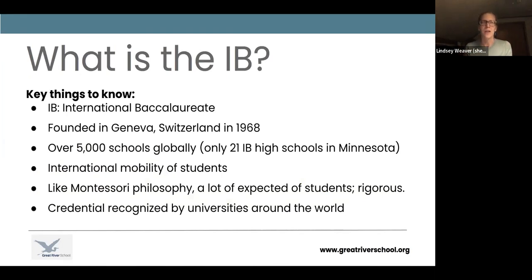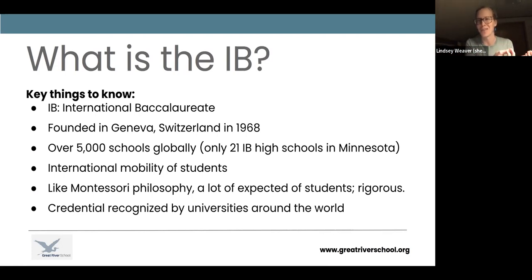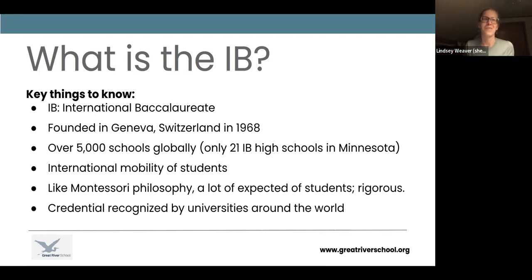The International Baccalaureate was originally intended to create a system where if a student moved countries — for instance, from the United States to the Czech Republic, or Japan to the United States — families could plan on not interrupting their children's education. If you're sitting in an IB math applications classroom at Great River School, there is another student sitting somewhere else around the world in an IB math applications classroom taking the exact same course. It's a very globally focused program.